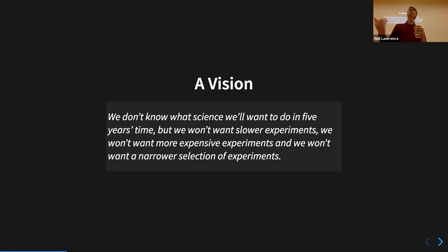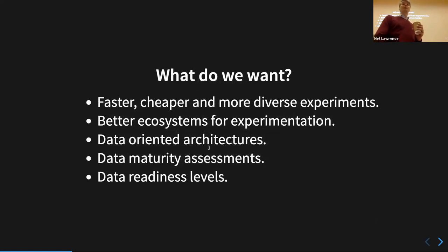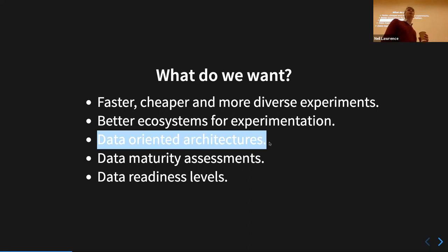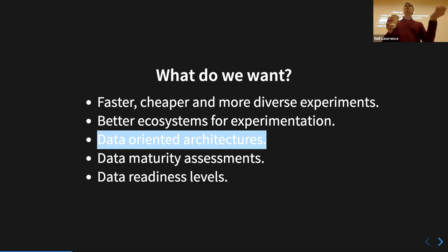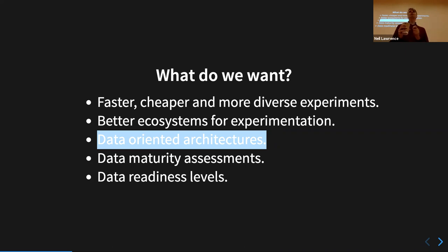Companies are going to become more quantitative and more data-driven. Improving the quality of these systems will be a major priority in the same way improving software engineering quality was. We want faster, cheaper, more diverse experimental capability — better ecosystems for experimentation. This is something my team works on: data-oriented architectures. It's a research area under AutoAI where you go beyond service-oriented architectures. In a service-oriented architecture you stand up a service; in a data-oriented architecture you stand up a data stream, and your software team is responsible for the quality and availability of that data stream.